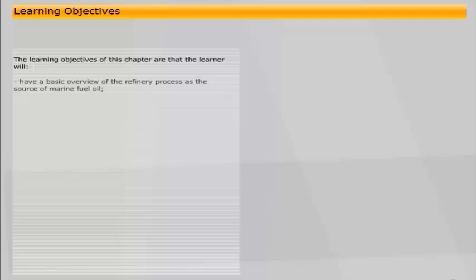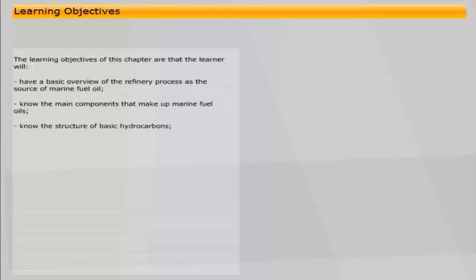The learning objectives of this chapter are that the learner will have a basic overview of the refinery process as the source of marine fuel oil, know the main components that make up marine fuel oils, know the structure of basic hydrocarbons, and know the other common elements that occur in the fuel structure.